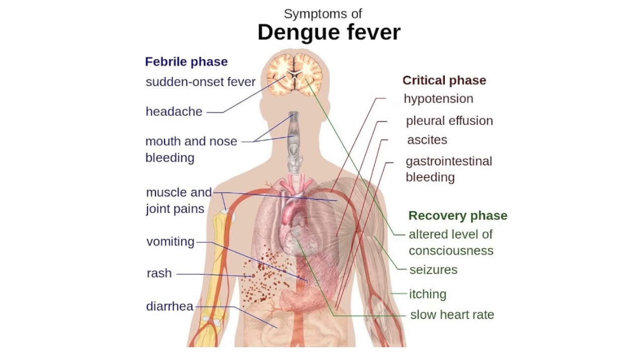The characteristic symptoms are high-grade fever, headache, pain behind the eyes, rash, muscle and joint pains — that is why dengue fever is also known as 'breakbone fever.' These symptoms usually last for 2 to 7 days. In about 5 percent of dengue cases, the disease progresses to severe dengue, dengue hemorrhagic fever, and dengue shock syndrome.